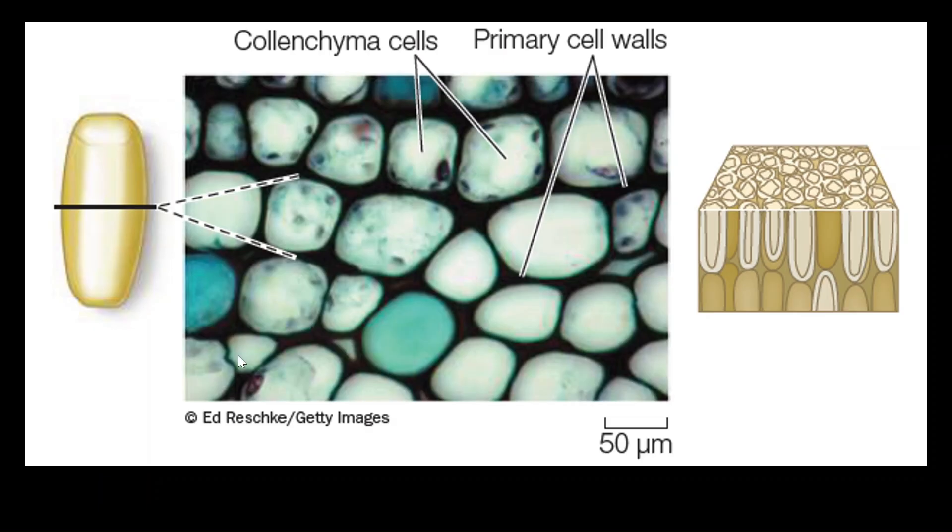Next, we have collenchyma cells. The first thing you notice is that they are elongated cells. Similar to your parenchyma cells, collenchyma cells can also restart their meristematic activity. But their main function is to provide resistance to the plants against mechanical stresses.